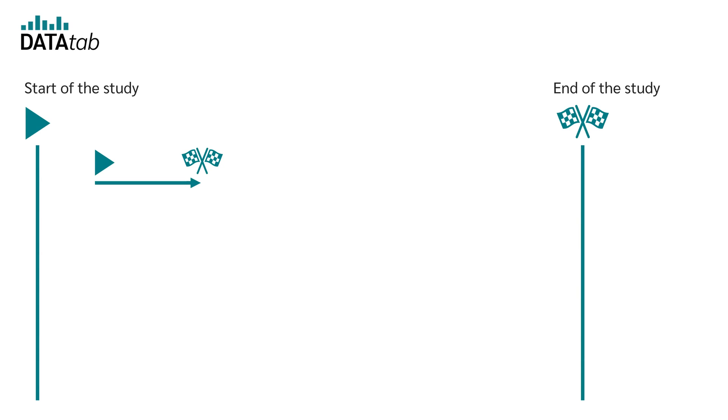If a case does not have a definite event, it is referred to as censored. Several methods have been developed to deal with this issue. Please have a look at my video on the Kaplan-Meier curve.